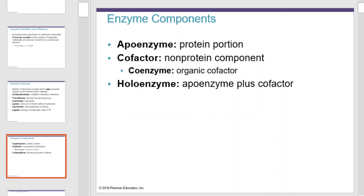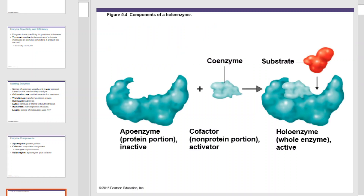Enzymes have a number of components: the apoenzyme, which is the protein portion; the cofactor, which is the non-protein component; the coenzyme, which is an organic cofactor; and the holoenzyme, which is the apoenzyme plus the cofactor combined. This is an illustration of the components of a holoenzyme.